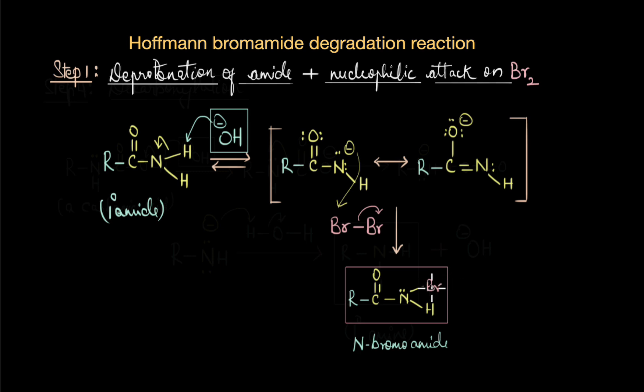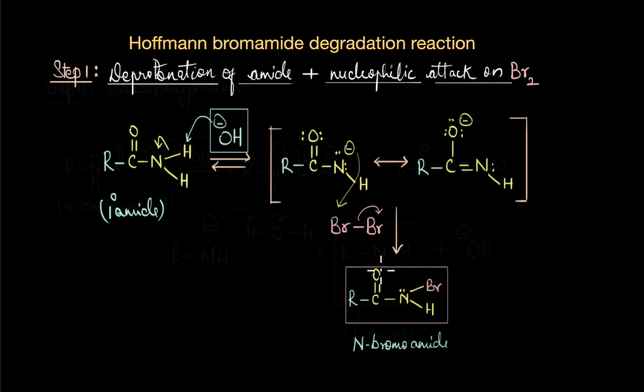The second step is once again a deprotonation step. The OH- abstracts another acidic hydrogen from this N-bromoamide. And here is where the magic happens. The presence of a very good leaving group like bromide ion allows this migration to happen. A double bond forms and the R group migrates towards the nitrogen atom with elimination of bromide ion.